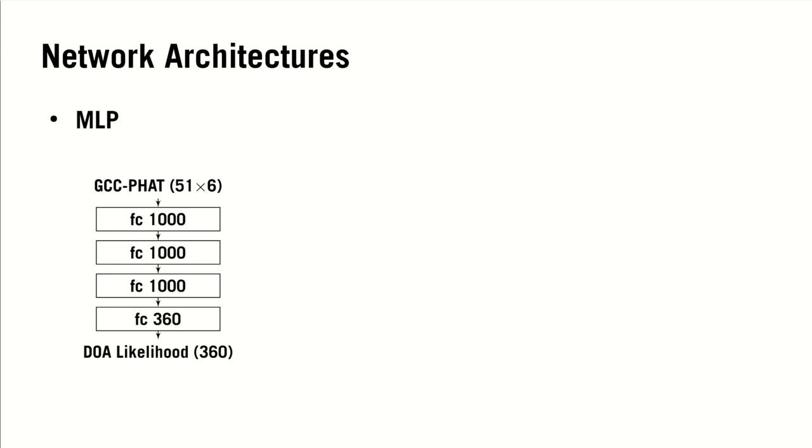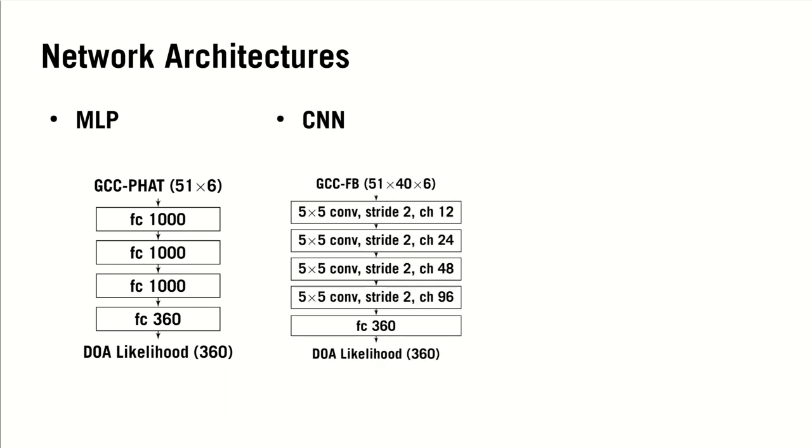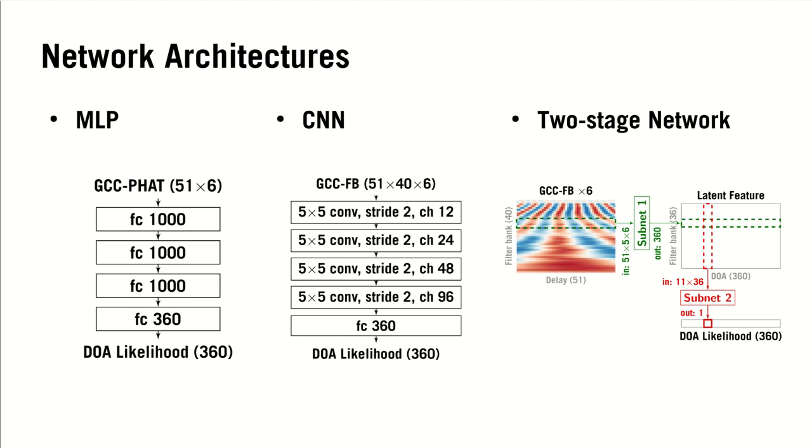As for the network architecture, we investigate three different types, including a multi-layer perceptron with the GCC-PHAT coefficients as input, a convolutional neural network which treats the GCC-PHAT on filter bank as images, and a two-stage network which considers the sub-band analysis before aggregation across all frequencies.